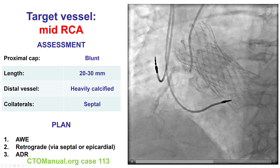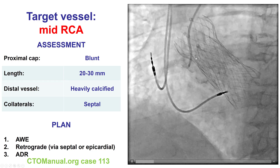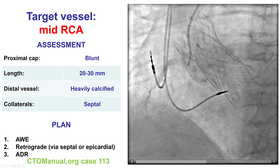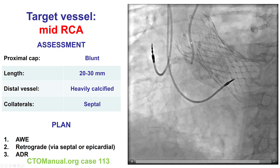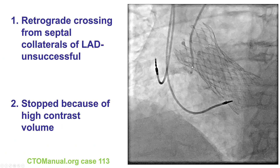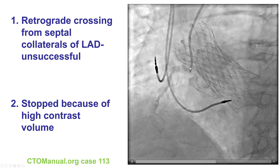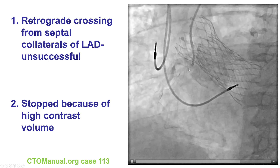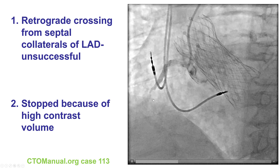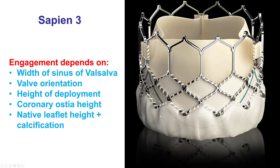Sometimes engaging the right coronary artery can actually be harder. In this case, there is valve involvement, which makes it even harder. In this particular patient, despite using multiple catheters, we were actually unable to selectively engage the right coronary artery to perform PCI of this right coronary artery chronic total occlusion.